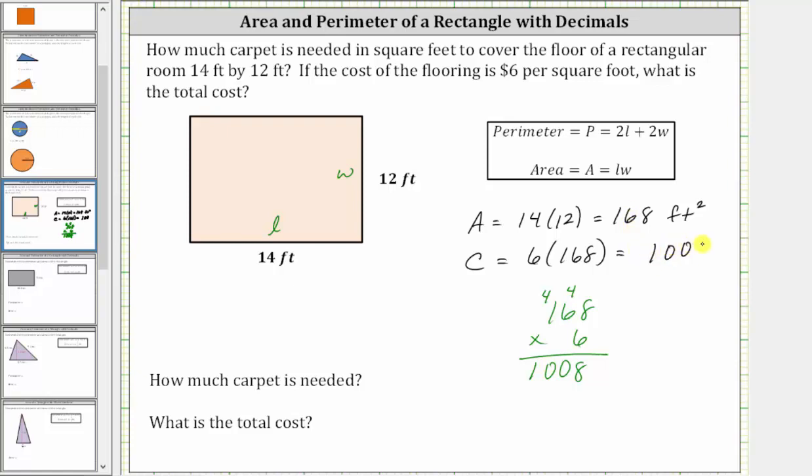And this is the total cost, which is $1,008. So now to answer the questions, how much carpet is needed? 168 square feet of carpet is needed. And the total cost is $1,008.